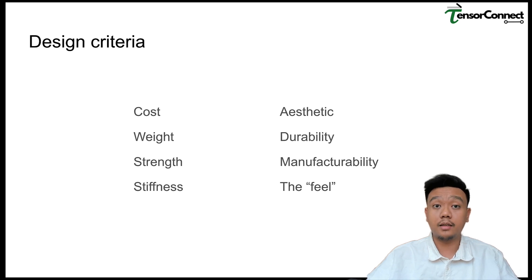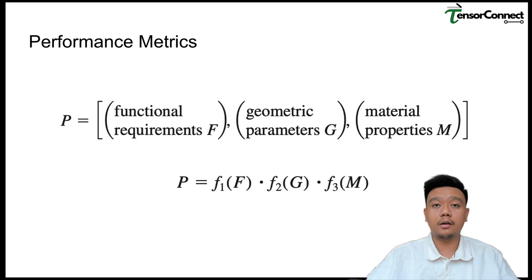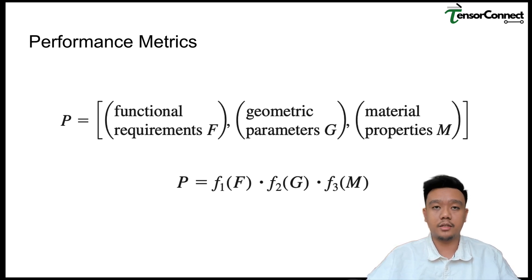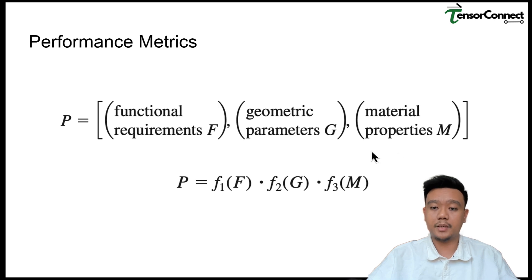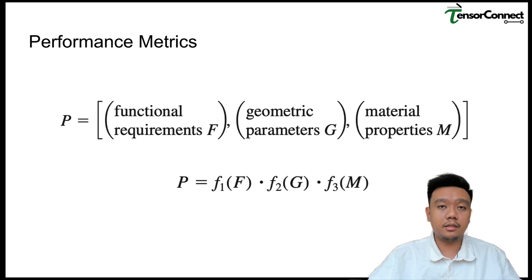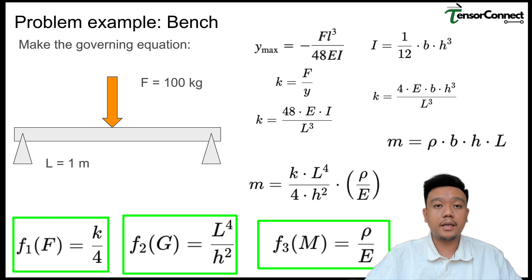To quantify our selection process we often use metrics known as performance metrics, which are the multiplication of three functions: F1 is the functional requirement, F2 is the geometry parameter function related to dimensions, and F3 is the material properties function. The material properties can consist of density, modulus of elasticity, and so forth. We will discuss the material properties part deeper in this topic.